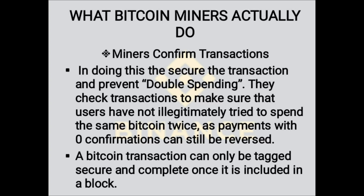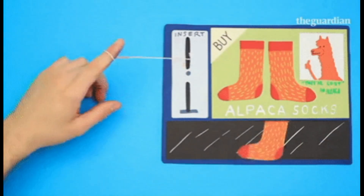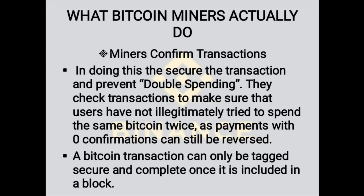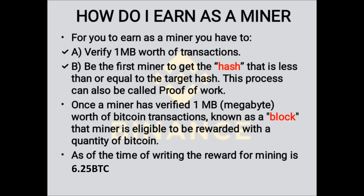What Bitcoin miners actually do is primarily to verify and confirm transactions. In doing this, they secure the transaction and prevent double spending. They check transactions to make sure that users have not illegitimately tried to spend the same Bitcoin twice. A Bitcoin transaction can only be considered secure and complete once it is included in a block.